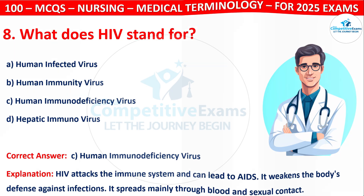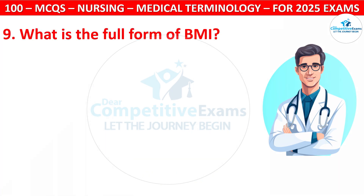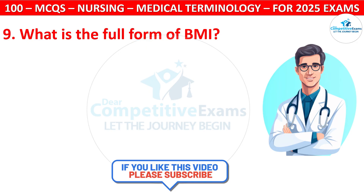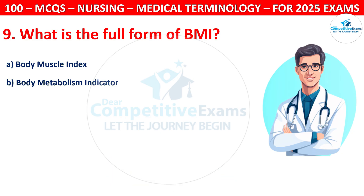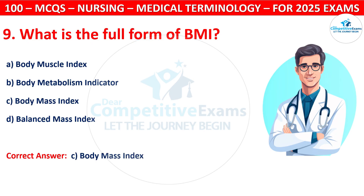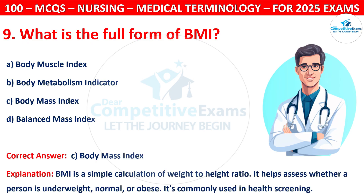Question 9: What is the full form of BMI? Options are: Body Muscle Index, Body Metabolism Indicator, Body Mass Index, or Balanced Mass Index. The correct answer is C, that is Body Mass Index. BMI is a simple calculation of weight-to-height ratio. It helps assess whether a person is underweight, normal, or obese. It is commonly used in health screening.